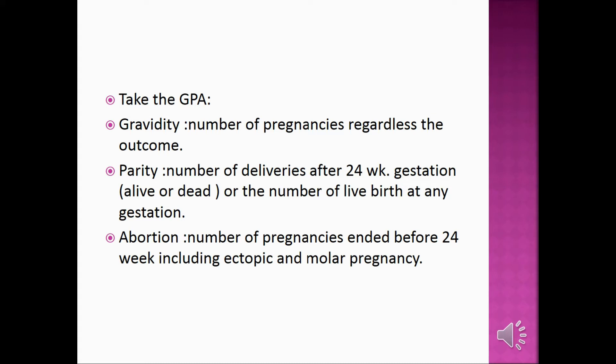Record gravidity — the number of pregnancies regardless of outcome. Parity refers to the number of deliveries after 24 weeks gestation, whether alive or dead, or the number of live births at any gestation. Abortion is the number of pregnancies ended before 24 weeks, including ectopic and molar pregnancy.